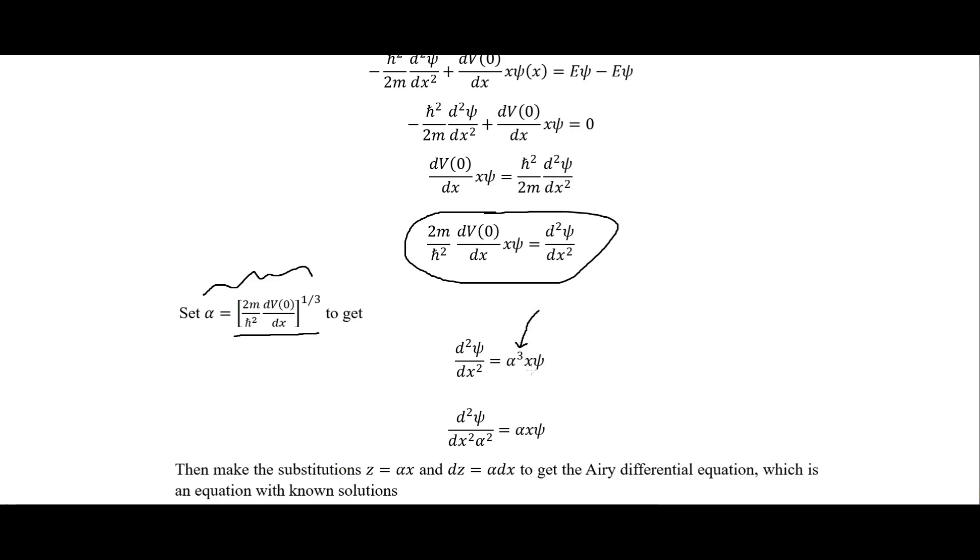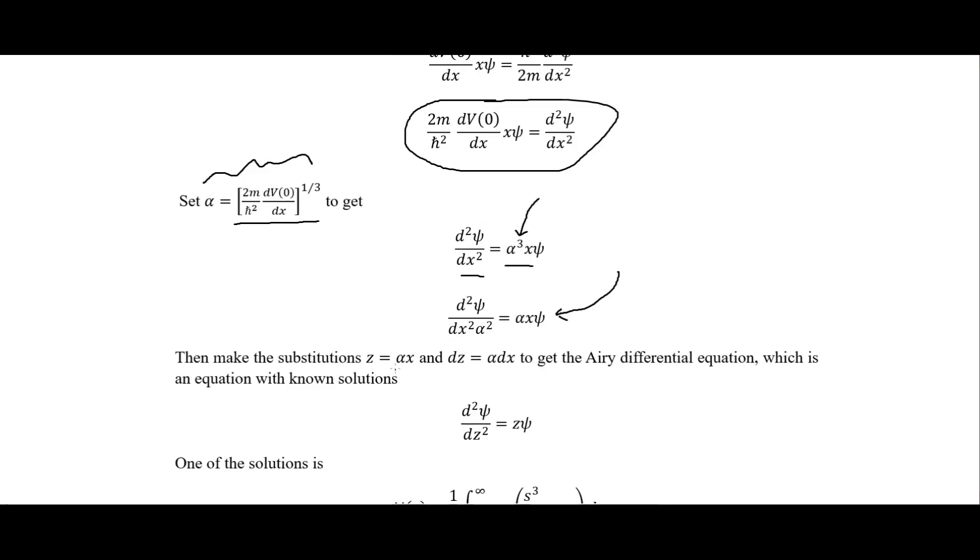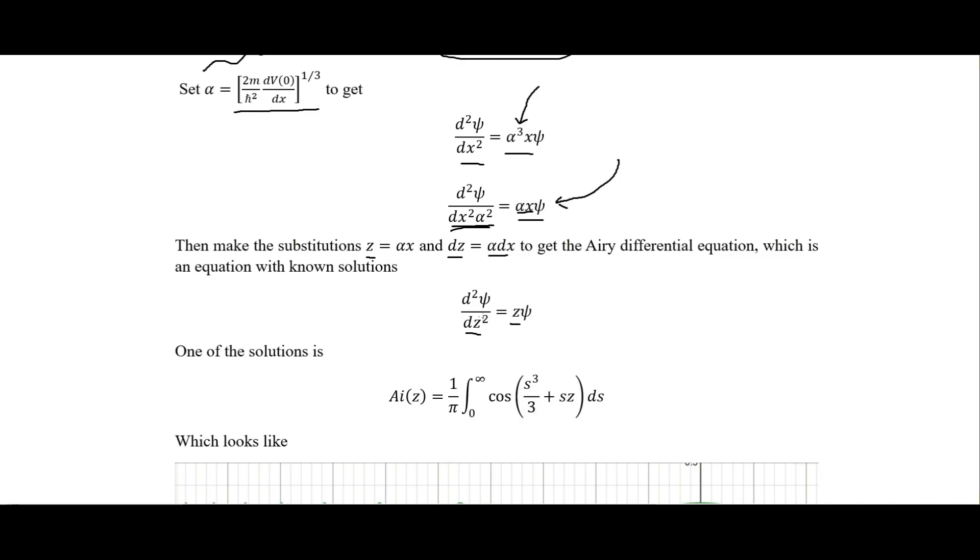We go through some algebraic manipulations and make a substitution, putting alpha in for the one-third power of this expression, so we get alpha cubed. Dividing both sides by alpha squared, we then substitute alpha·x → z and alpha·dx → dz, giving us d²/dz², and we end up with a z term — putting this in the form of the Airy differential equation.